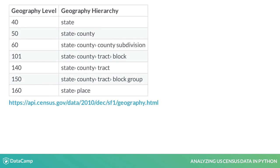This is a partial list of geographies available via API for the 2010 census. The API does not expose all geographies that the Census Bureau reports on, and the geographies differ by data product. You can view the list for any data product by appending geography.html to the API base URL. An example for the 2010 decennial census is shown here. You will get familiar with these and other geographies throughout this course.